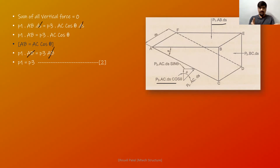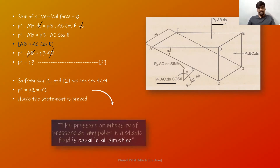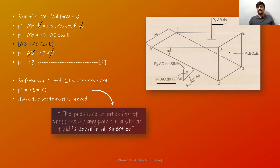On the basis of Equation 1 and Equation 2, we can say that P1 equals P2 equals P3. Hence the statement is proved: the pressure or intensity of pressure at any point in a static fluid is equal in all directions. Note that this applies to static fluid only — it is not for compressible or incompressible flow distinctions, it is only for static fluid. We took a static wedge-shaped triangle with three points, measured pressure at each side P1, P2, and P3, and after summation of all forces proved that pressure is equal in all directions.